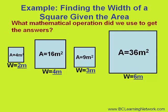Now, the real question becomes: what mathematical operation did we use to come up with these answers? What did we do to 16 to come up with the answer of 4? Or, what did we do with 36 to come up with an answer of 6?